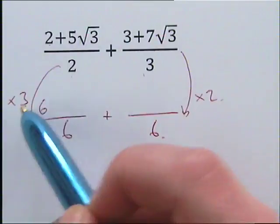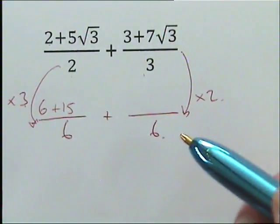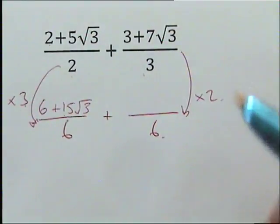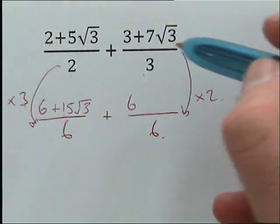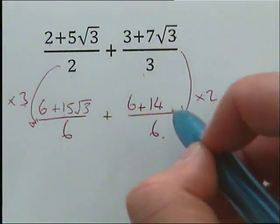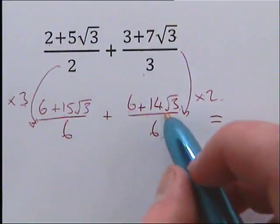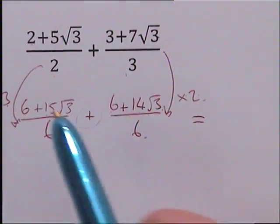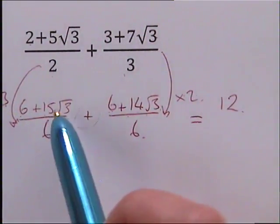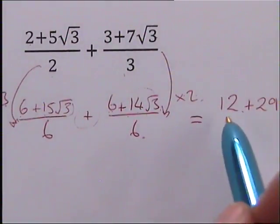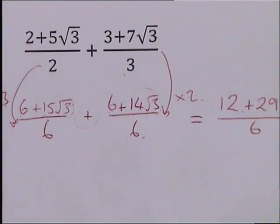So now we do 2 times 3 is 6. Then we're going to do 5 times 3 is 15, and we can't do anything to our root 3 because that's attached to our 15, so we're just going to keep that as root 3. Then we're going to do 3 times 2 is 6, and 7 times 2 is 14. Again, can't do anything with our root 3 because that's attached to our 14. So we're going to get 6 plus 14 root 3. Then we're just going to add it all together. So 6 plus 6 is 12. 15 root 3s plus 14 root 3s gives 29 root 3s. And our 6 just stays on the bottom.